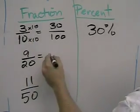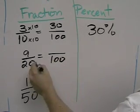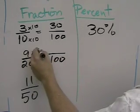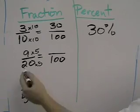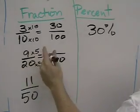I can make 9 twentieths have a denominator of 100 by multiplying the numerator and the denominator by 5. 20 times 5 is 100, 9 times 5 is 45.